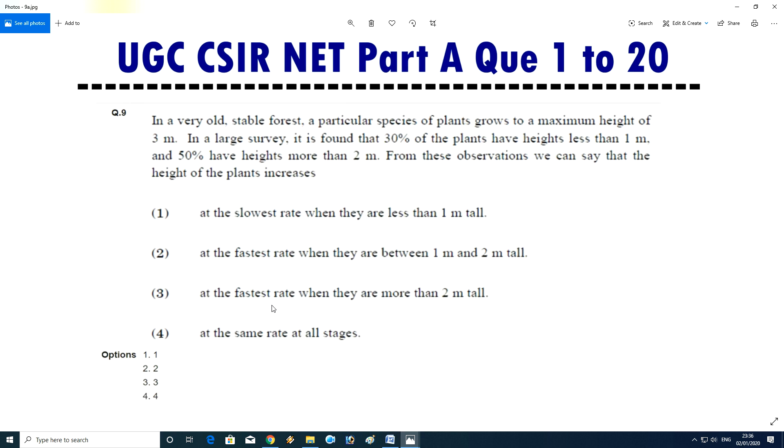Question number nine: in a very old stable forest a particular species of plant grows to a maximum height of three meters. In a large survey it is found that 30 percent of plants have a height less than one meter and 50 percent have a height more than two meters. From this observation we can say that the height of plants increases at the slowest rate when they are less than one meter tall, at the fastest rate when they are between one meter and two meter tall. Answer is second, at the fastest rate when they are between one meter and two meter tall.